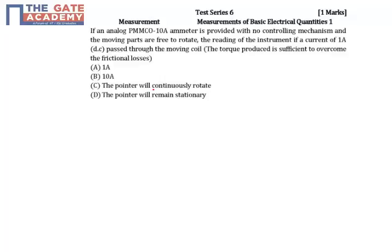Now, what is the question asking? If the reading of the instrument is one ampere, then he is asking what is the current that passes through the moving coil. When the reading of the meter is one ampere, what will happen? It will move continuously because the moment when it reaches one ampere...